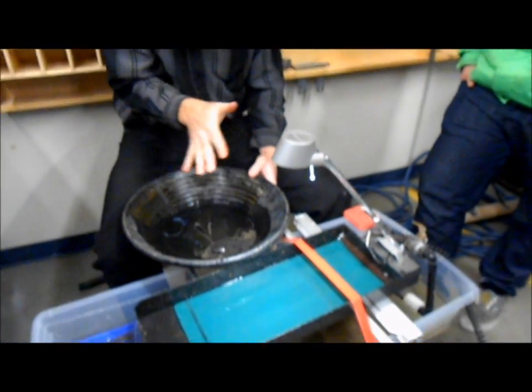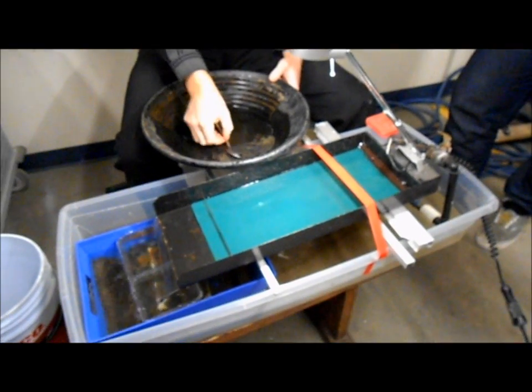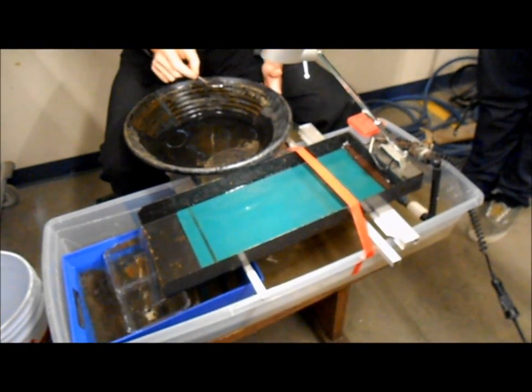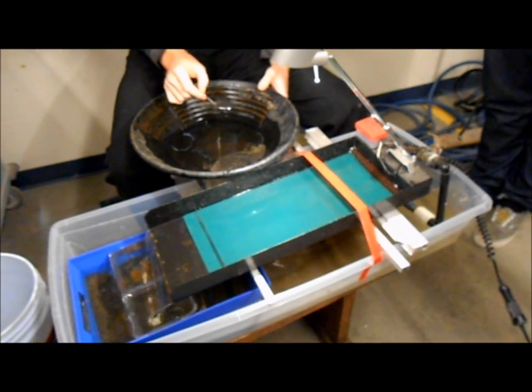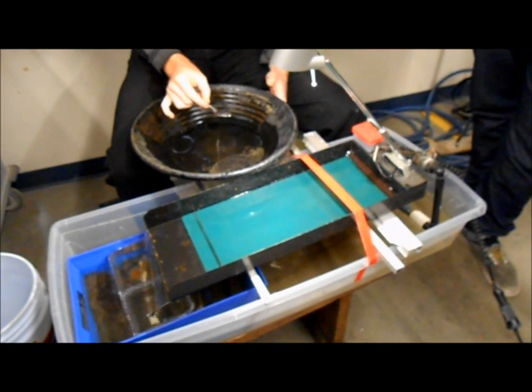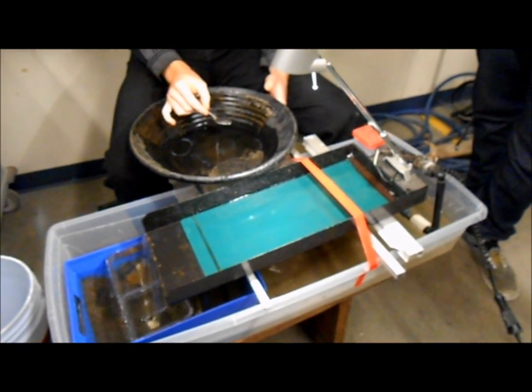You have to set it up just right at the just right angle, just the right flow of water so that the gold flakes don't get up into the water flow and start fluttering around and go away. And a longer miller table actually helps with that. If they do get up there fluttering around, they have a chance to fall down and lay flat.